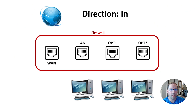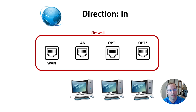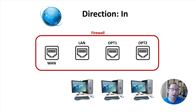Here's an example of a firewall that has four interfaces: WAN, LAN, Optional One, and Optional Two, plus an internet connection. We have three computers — but they could be three networks with a switch plugged in. I'm keeping it simple with three computers, one on each interface.